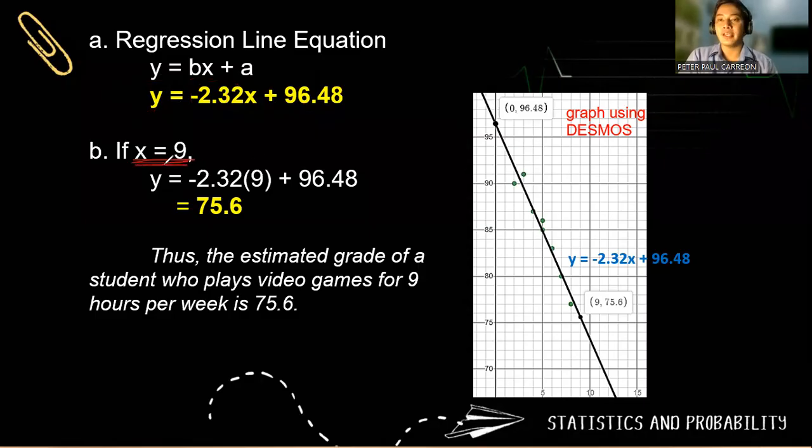So if you are playing nine hours in video games using the regression line equation, then y = -2.32 times 9. So you have to substitute for the value of x because that's nine hours plus 96.48. So therefore, the grade will be 75.6. So you see, the more that you play video games, the more that you could have this lower grade. So thus, do not forget the conclusion because this is very important in your solution. The estimated grade of a student who plays video games for nine hours per week is 75.6.